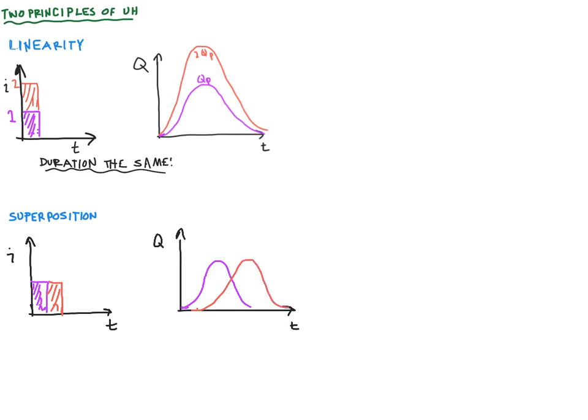So my overall hydrograph here is going to be the sum of both of them together. It's going to look something like this. This is my Q peak. It takes into account that first, let's say, two-hour storm and the second two-hour storm, both with an intensity or total rainfall excess of one inch or one centimeter. So let's look at applying unit hydrograph to an actual storm.